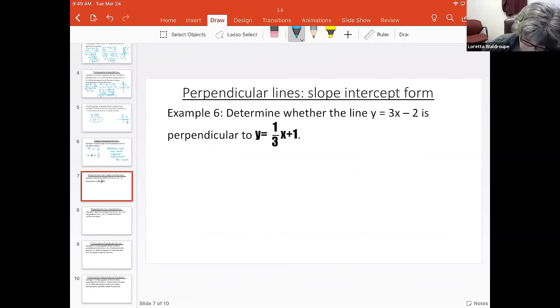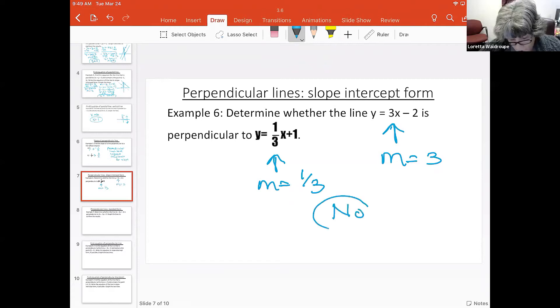If I look at these two lines, the slope here is three, the slope here is one-third. Are those two slopes perpendicular? They did flip them, but they don't have opposite signs. So since they don't have opposite signs, no, they are not perpendicular.